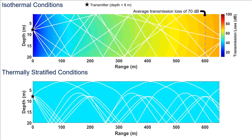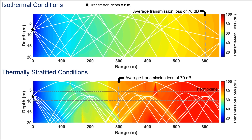The second figure is a plot of a sound signal's travel path in a stratified condition with a thermocline located between 7 to 10 meters. Here, instead of traveling in a straight line, the acoustic rays bend downwards as they cross the thermocline. The color map shows the effect of bending on the pattern of power loss as the acoustic signal moves away from the transmission source. In this thermally stratified scenario, we see an average transmission loss of 70 decibels by the time the signal reaches approximately 300 meters from the source, about half the distance of the isothermal case.